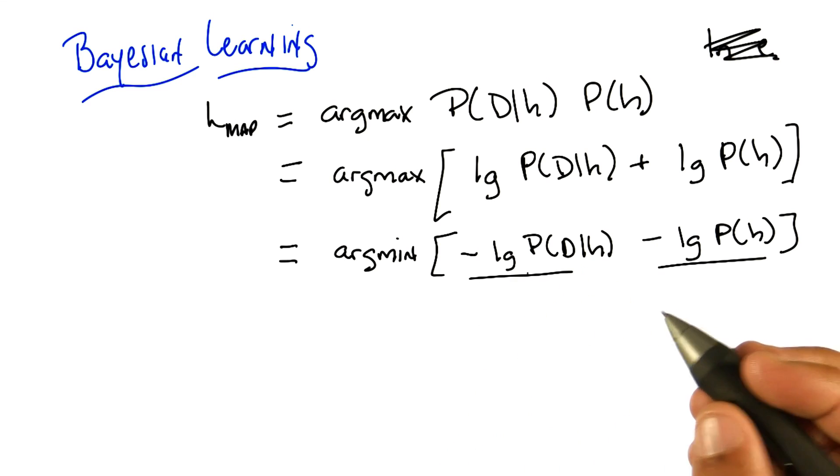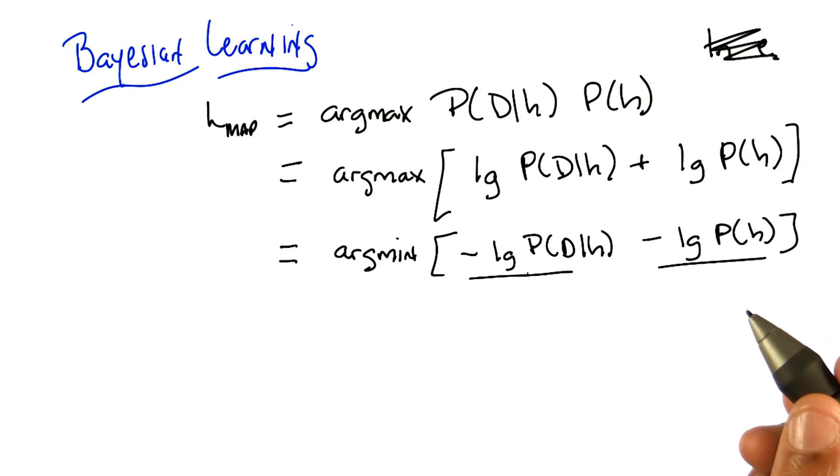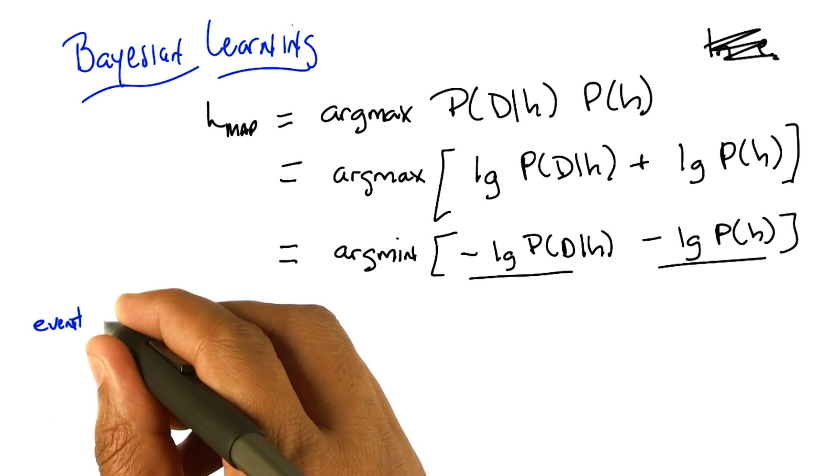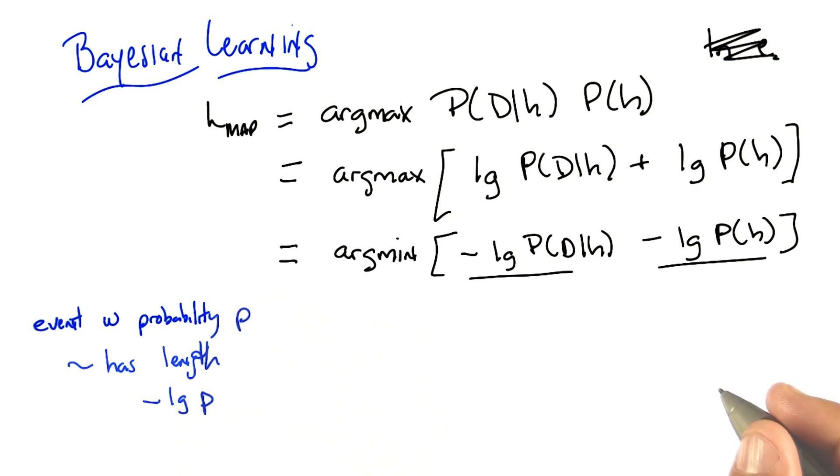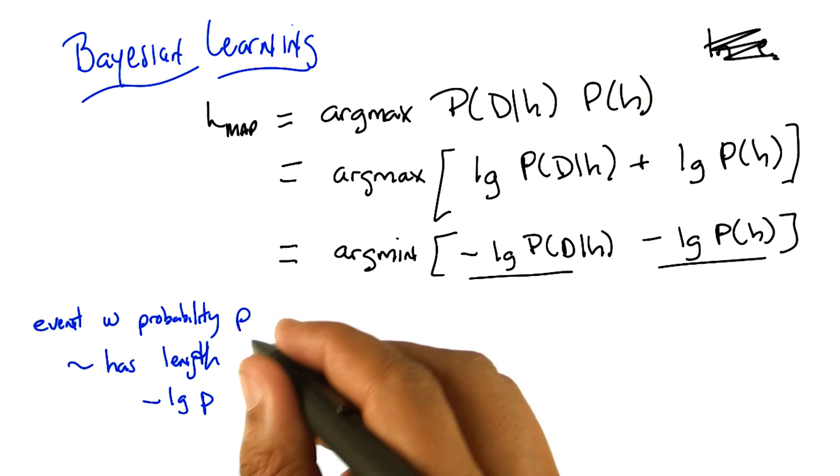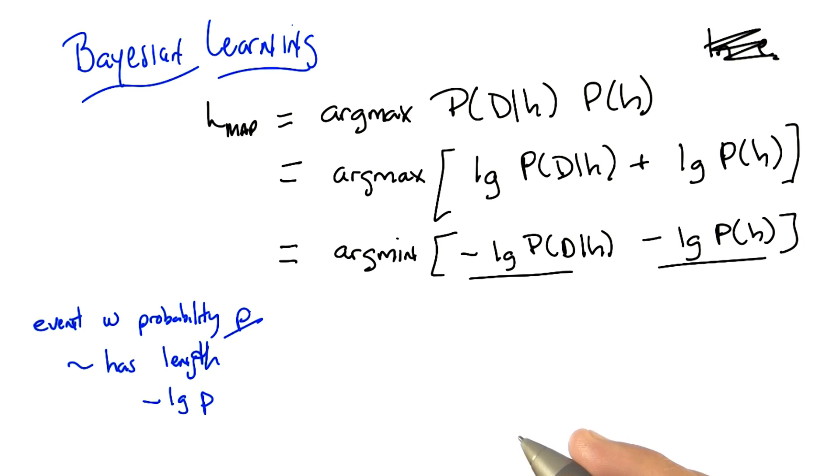That's true, but we know from information theory based exactly on this notion of entropy, that the optimal code for some event with probability P has length minus log base two of P. So that just comes straight out of information theory. That's where all the entropy stuff comes from. Okay? So if we have some event that has some particular probability P of happening, the best code for it has this structure, minus log of P.